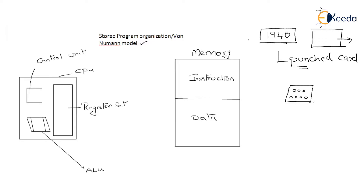If you are a programmer, you don't need to collect any punched cards. Rather, you just write your program using some peripheral devices. If you want to execute a program, you should be able to store the program in memory. This is all about von Neumann architecture, also called stored program organization. The fundamental rule is: since the computer system is equipped with an additional component called memory, a programmer is required to write and store the program in main memory for execution.